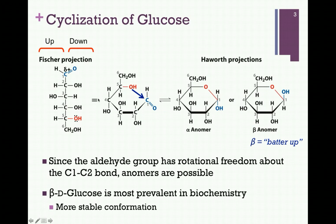Because there's free rotation in that carbon-1–carbon-2 bond, nucleophilic attack can occur in one of two positions. If it attacks in one position, the hydroxyl group that forms at carbon number 1, highlighted here in blue, is below the plane of the ring, and we call that the alpha anomer. If it attacks in the opposite position, the OH is above the plane of the ring, and we call that the beta anomer. The easiest way to distinguish these is to remember that beta — batter up — the OH is in the up position. We call these anomers, and the carbonyl carbon that carries the oxygen atom, which will become the hydroxyl in one of these two positions, is known as the anomeric carbon.